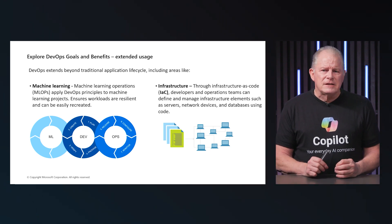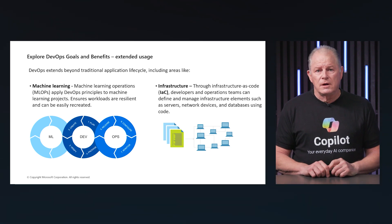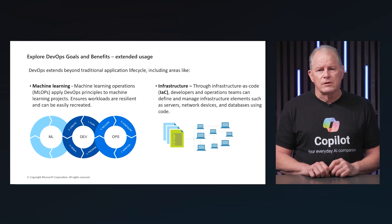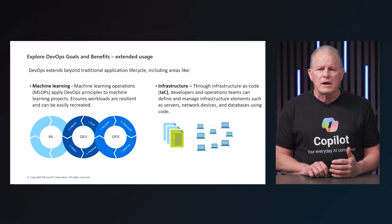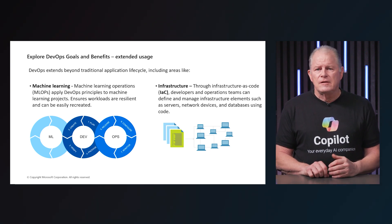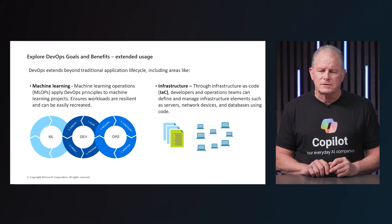Expanding the definition of everything means DevOps is not just for application code. DevOps can apply to machine learning models, integrations such as API life cycles, infrastructure as code, and configuration management. These are just examples of the evolving domains covered by DevOps.